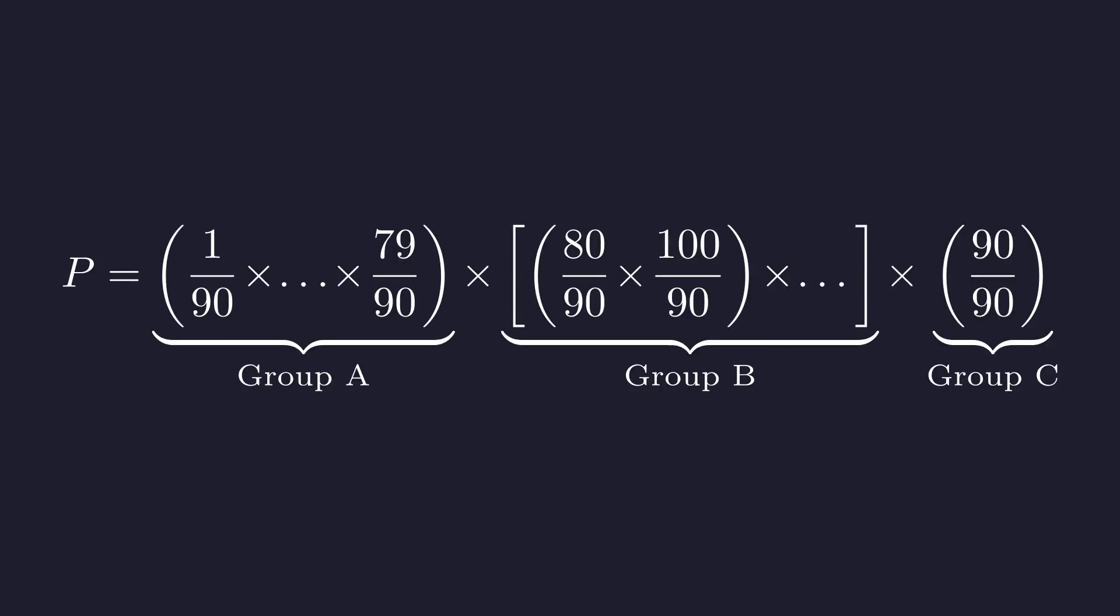Now, let's reassemble the full product with this new insight. Our product P is made of three groups. Let's analyze each one carefully. Group A is a product of 79 fractions, all of which are less than 1. Their total product is therefore a very small number, much less than 1.